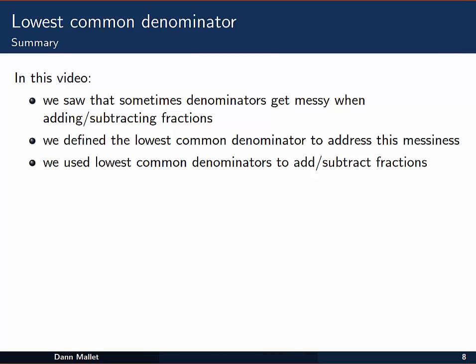Okay, so in this video we've seen that sometimes denominators get messy when we're adding and subtracting fractions. And one way to make them slightly less messy, although the last example got a little bit messy anyway, was to define what we call a lowest common denominator. We use that lowest common denominator then to add and subtract the fractions.